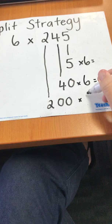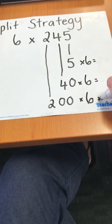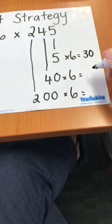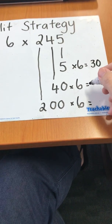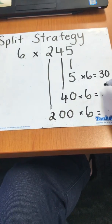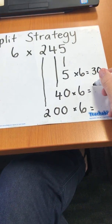5 times 6 equals 30. 4 times 6, 40 times 6 is 4 times 6 which is 24.